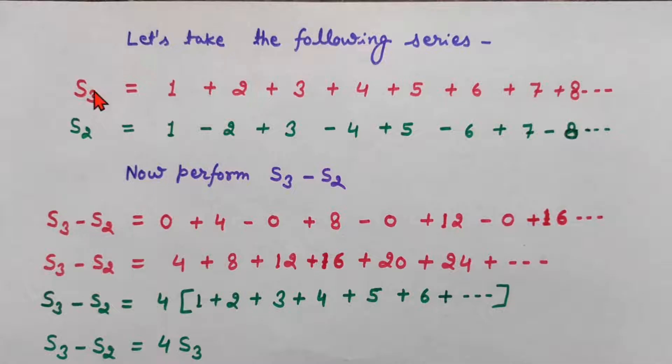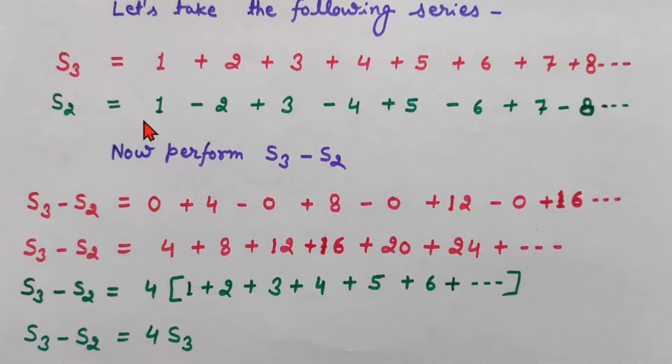We know how to subtract. So on the left hand side, we can write S3 minus S2. And we will subtract each term, first term from the first term and second term from the second term. We can change the signs to subtract. This will become minus. This will become plus. This is simply the subtraction process.